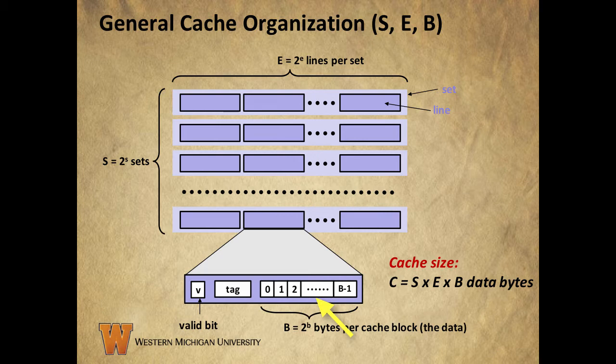Let's clear up something that can be a bit confusing about this illustration. For capital S, capital E, and capital B, you'll notice that each is equal to 2 to the lowercase letter involved. So capital S equals 2 to the lowercase s, capital E equals 2 to the lowercase e, and capital B equals 2 to the lowercase b. This notation means that capital S, capital E, and capital B will always be powers of 2. We're dealing with bits here, so we have a base-2 numbering system. The value of capital E, for example, could be 1, 2, 4, 8, etc., but is never going to be 3 or 5. The lowercase letters indicate how many bits are needed to uniquely identify each set, line, or byte in question.